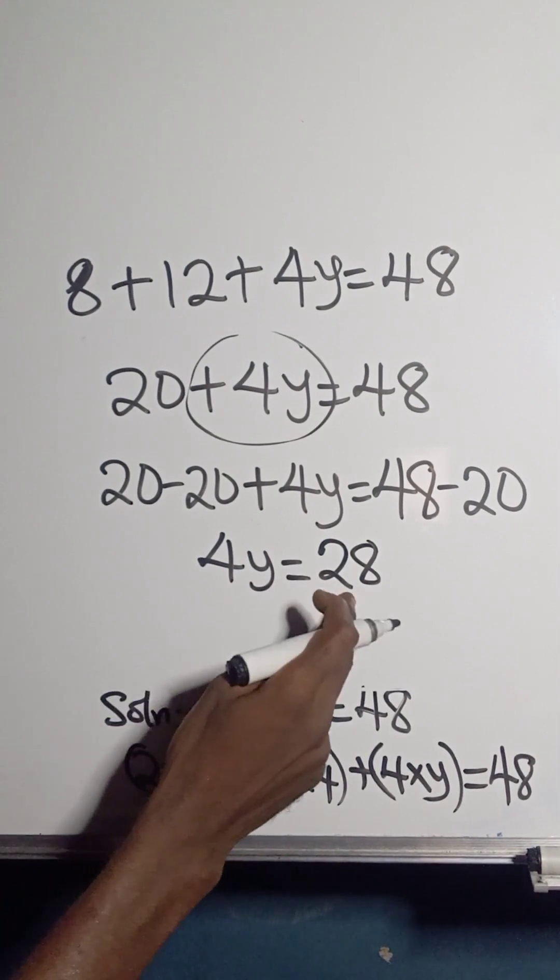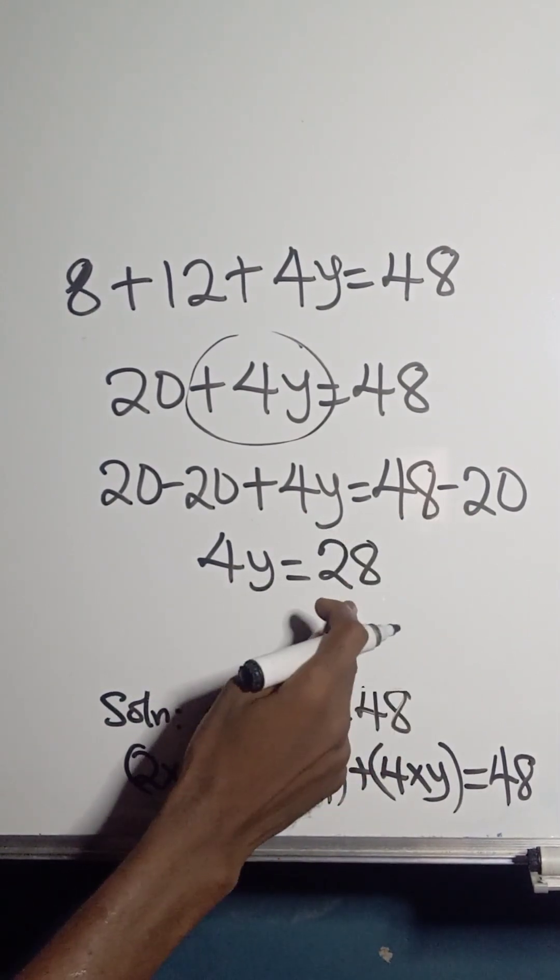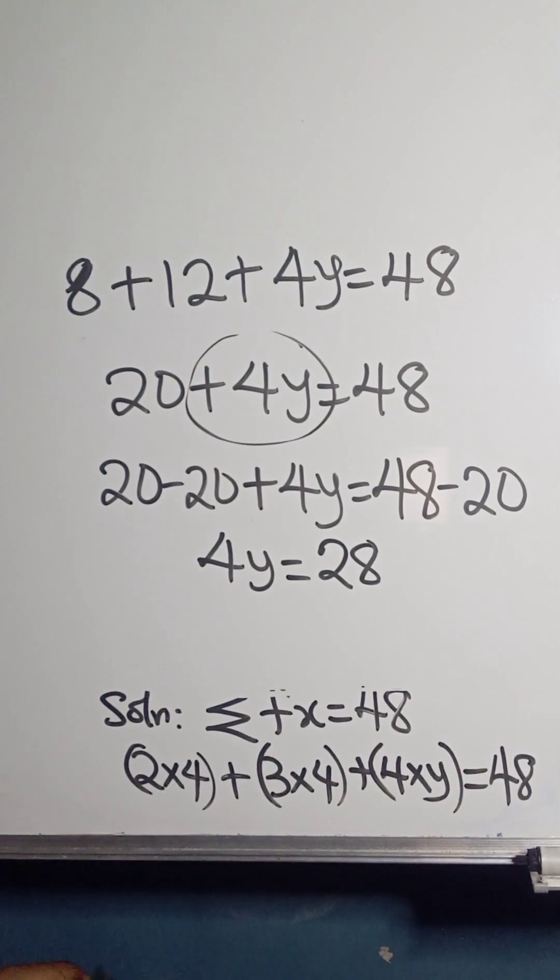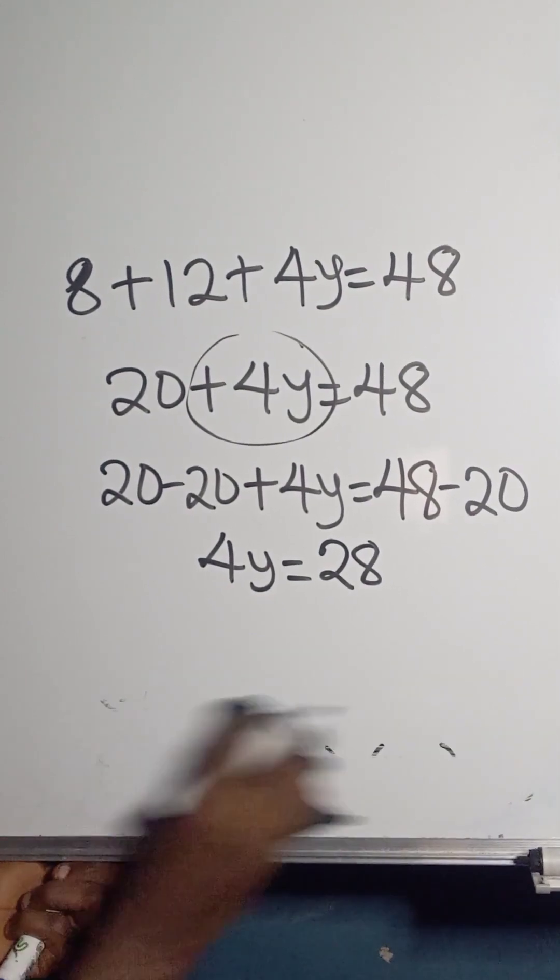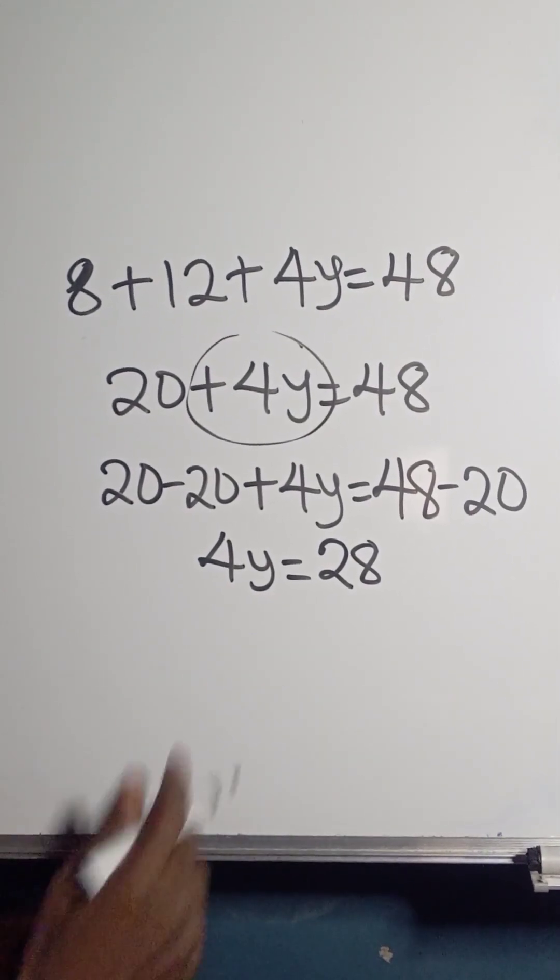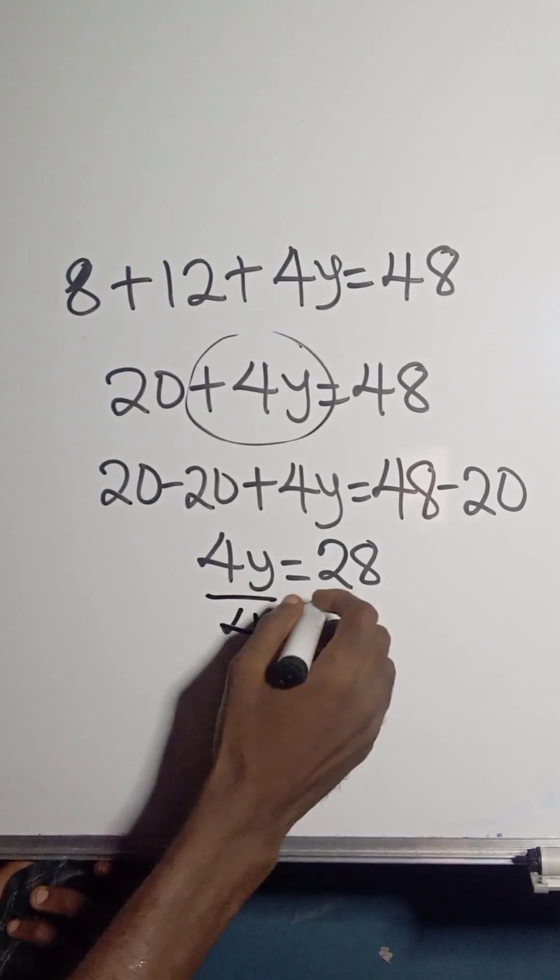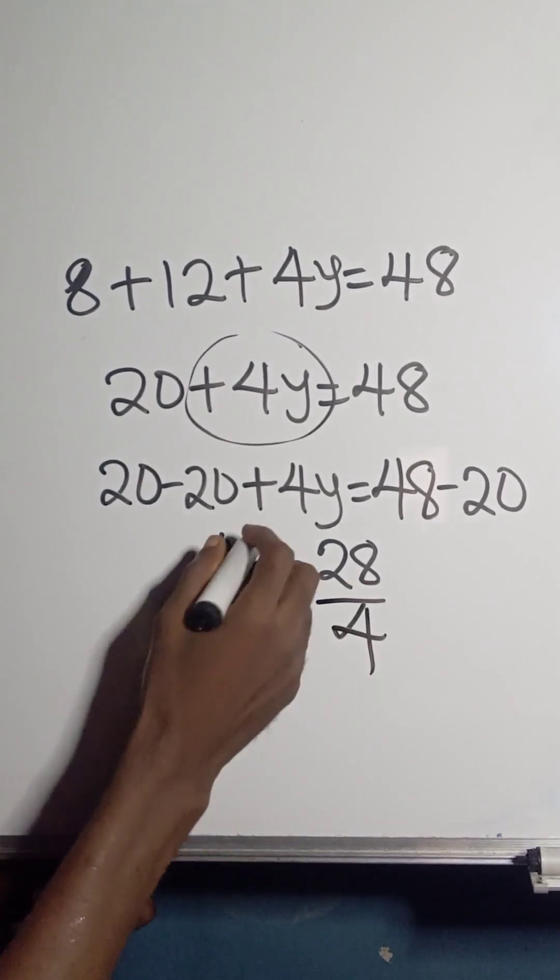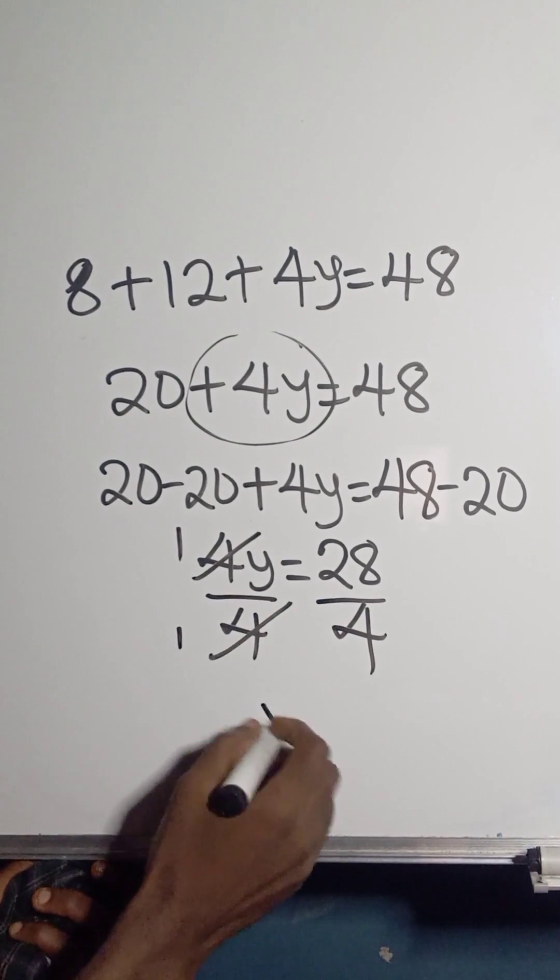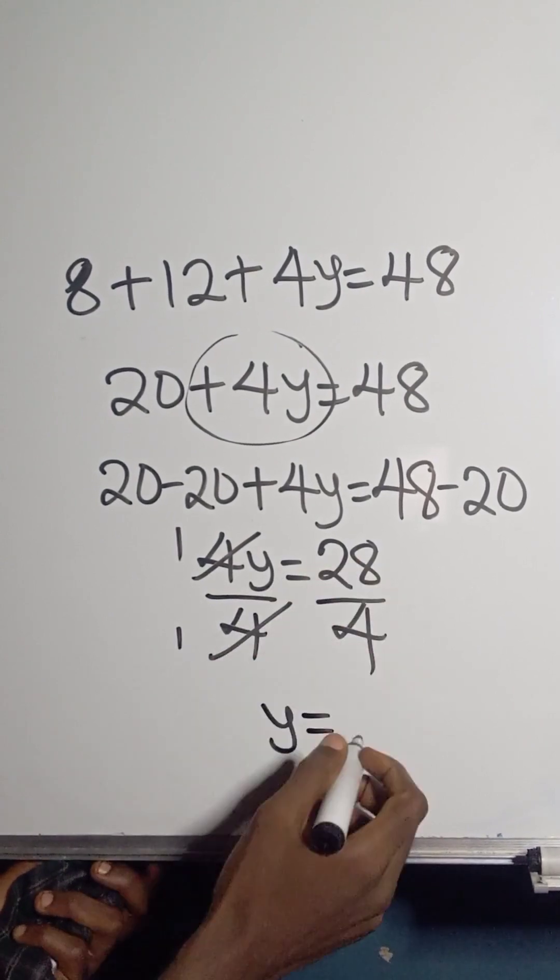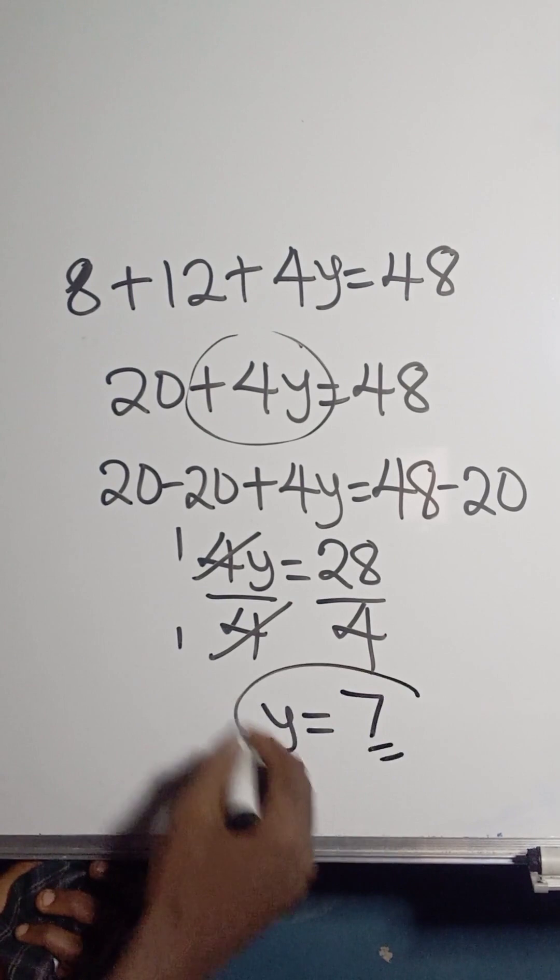From this point, divide both sides by 4, so 4 cancels 4 and we are left with y. 28 divided by 4 gives us 7, so this is the answer for the value of y.